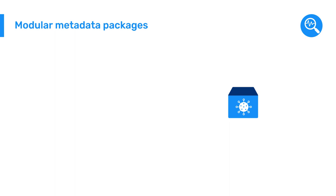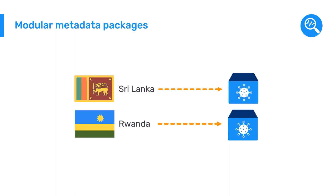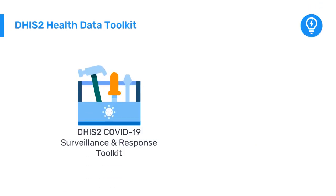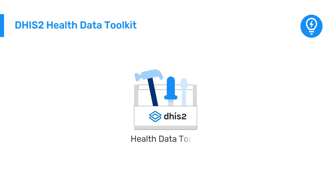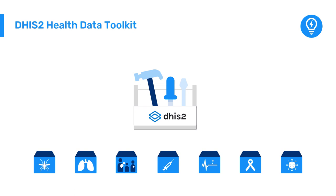This is possible because while DHIS-2 metadata packages provide a starting point for configurations, countries are free to further customize and adapt them as desired to meet specific local needs. Both the COVID-19 Surveillance and Response Toolkit, alongside the COVID-19 Vaccine Delivery Toolkit, are components in a larger collection of resources known as the DHIS-2 Health Data Toolkit. The DHIS-2 Health Data Toolkit contains toolkits that can help a variety of health programs beyond COVID-19, including malaria, tuberculosis, maternal and child health, and more.